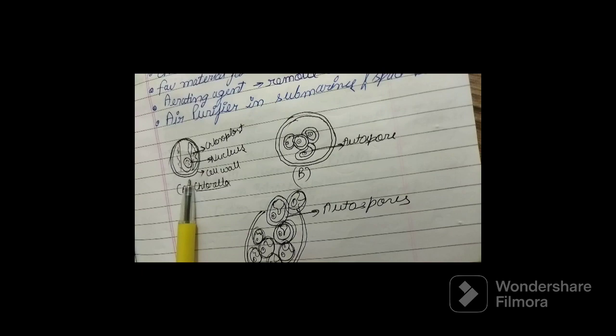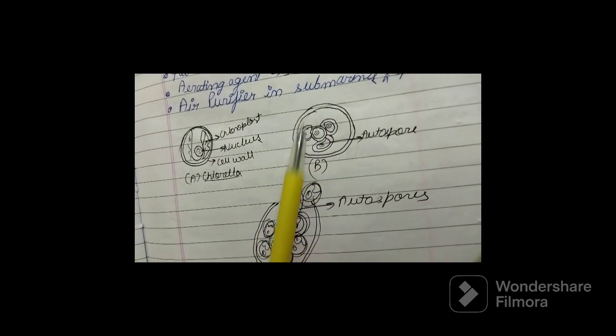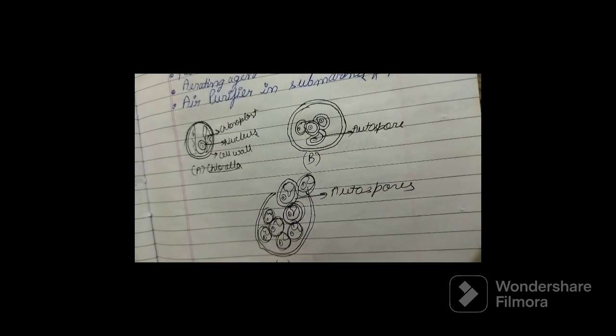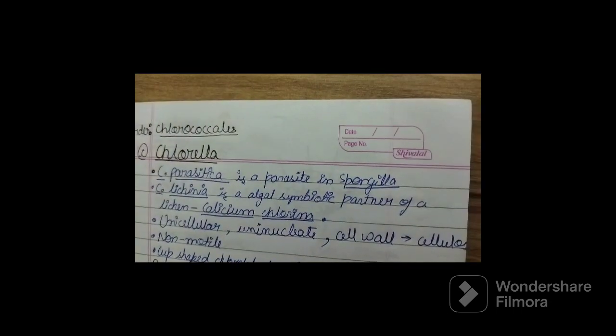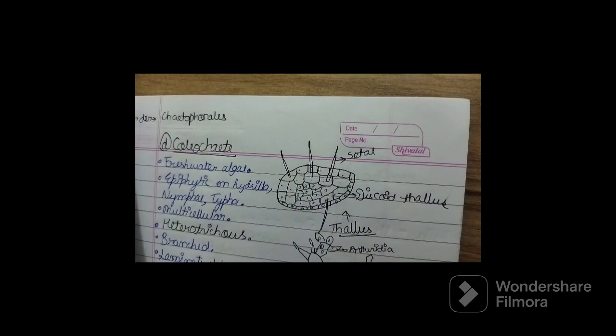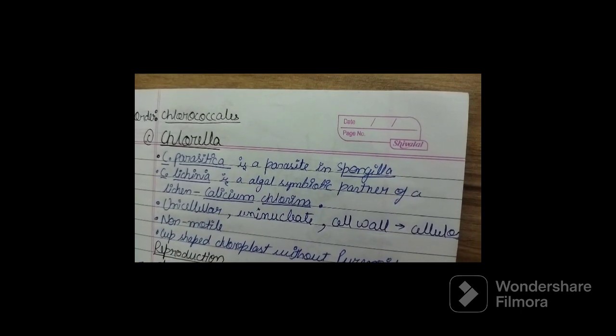This is how your Chlorella looks like. These are the autospores. This is the process of how autospores are liberated out. So that's all for Chlorella. And in the next video, we will talk about Choleochaete. Thank you for watching.